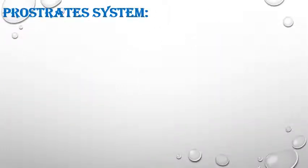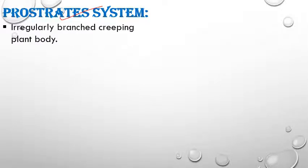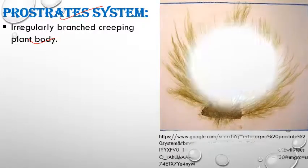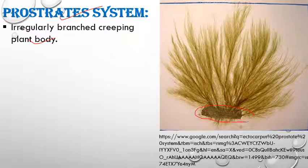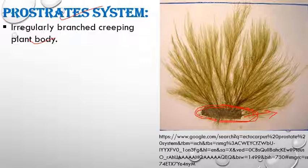The prostrate system runs over the surface of the substratum lying horizontally — it is an irregularly branched, creeping plant body. Its main function is to help in attachment of the plant body to the substratum. It bears root-like structures which are not true roots; they are called rhizoids, also known as holdfasts or hapteron.